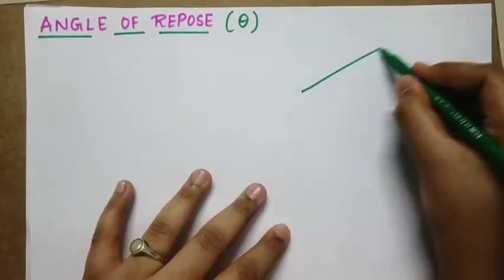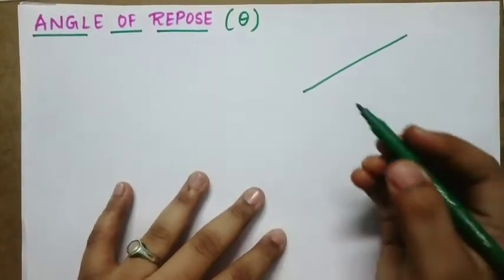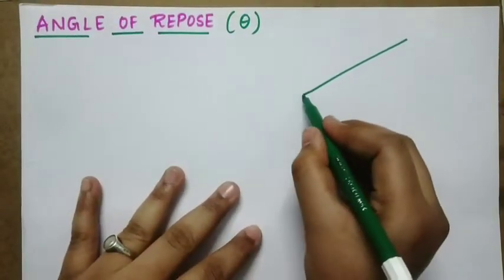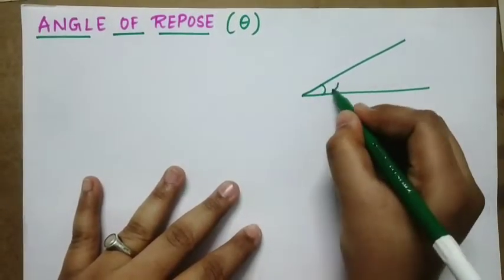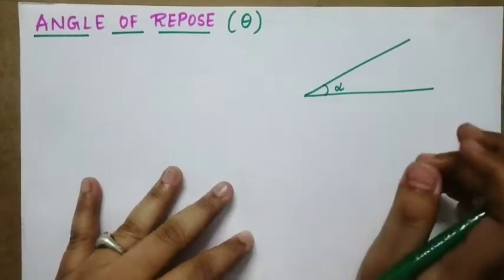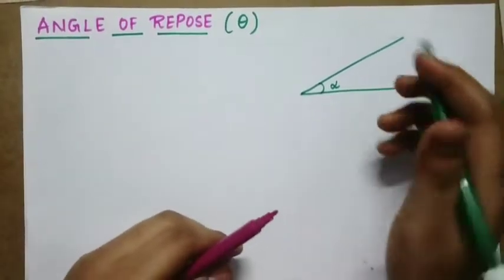Suppose one inclined plane is making an angle alpha with the horizontal, then we want to place a body on it.